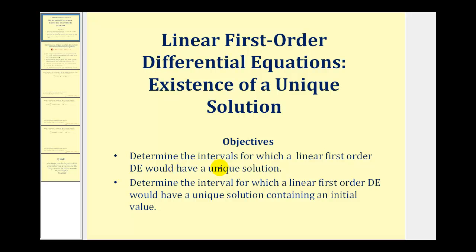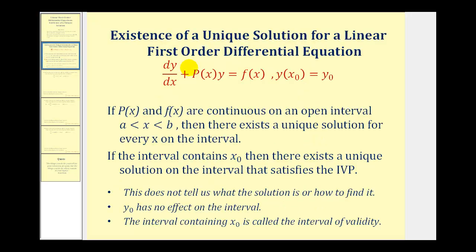Welcome to a lesson on determining the intervals for which a linear first order differential equation would have unique solutions, as well as the interval for which the differential equation would have a unique solution containing an initial value. If we have a first order differential equation in this form with this initial condition, if p(x) and f(x) are continuous on an open interval from a to b, then there exists a unique solution for every x in the interval. If the interval contains x-sub-zero from the initial condition, then there exists a unique solution on the interval that satisfies the initial value problem.